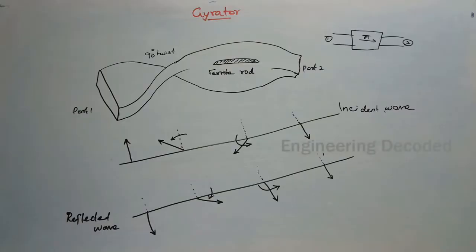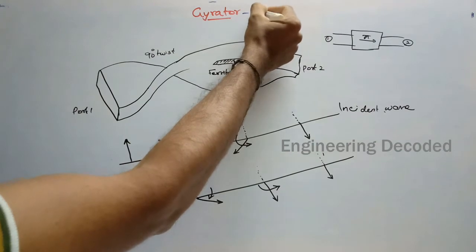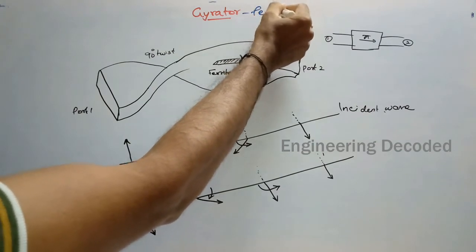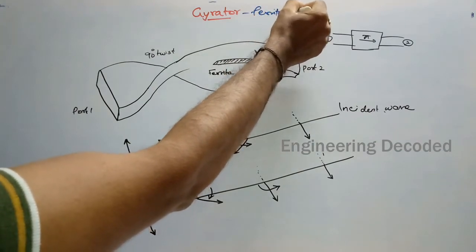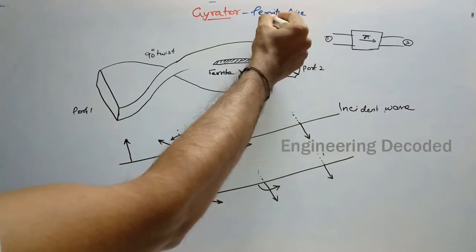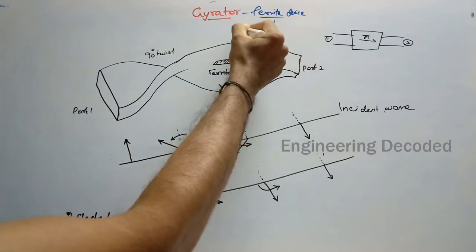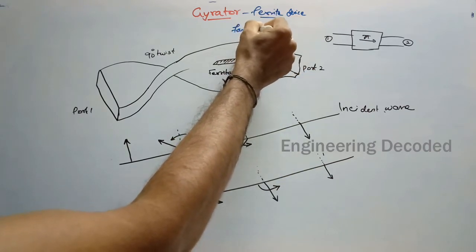Welcome to all. In today's class we are going to see about the Gyrator. Gyrator is a ferrite device. We know ferrite — a ferrite device mainly works on Faraday's law of rotation.